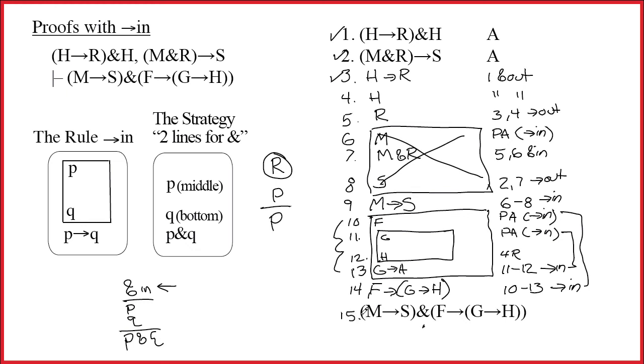What will the justification for the conclusion on line 15 be? Well, when we did two lines for ampersand, we penciled in lines 9 and 14. They didn't have line numbers before, but they do now. So all we have to write over here is 9, 14, and then the name of the rule, ampersand in. And we're done.